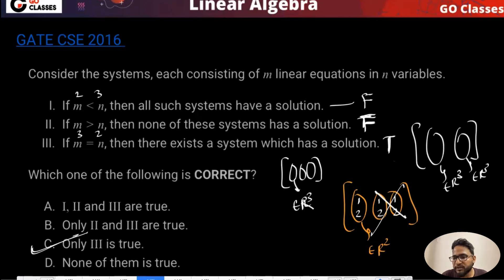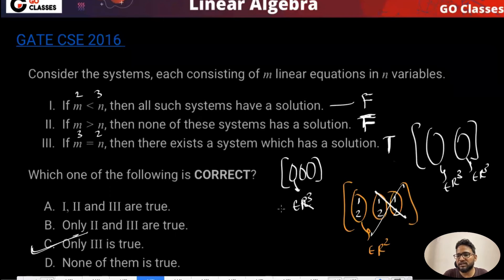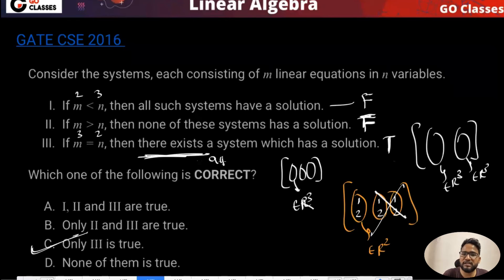In option three, if it said all the systems do not have the solution - if this is 'all' instead of 'there exists' - then the answer is false.